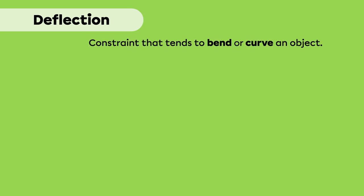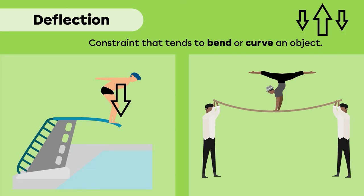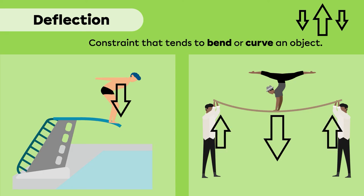Deflection is a constraint that tends to bend or curve an object. Deflection can be represented using one or more force arrows depending on the situation. For example, take a person standing on the end of a springboard: the person's weight acts on the springboard due to gravity, and since the other end is attached, this force bends the springboard. In the case of an acrobat standing on a bar held by two people, the forces are represented differently, but this is still referred to as deflection. The acrobat applies a force toward the ground at the center of the bar, while each person applies an upward force to each end.